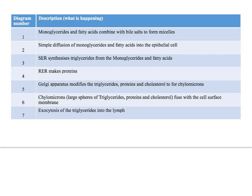Here are the mark points for the absorption of lipids. Monoglycerides and fatty acids form micelles. Because they are hydrophobic, they diffuse into the epithelial cell. The smooth endoplasmic reticulum synthesizes triglycerides from those absorbed fatty acids and monoglycerides. The rough endoplasmic reticulum makes proteins. The Golgi apparatus modifies the triglycerides and proteins and adds cholesterol to form spheres called chylomicrons — large spheres made from triglycerides, proteins, and cholesterol. They fuse with the cell surface membrane, and the triglycerides enter the lymphatic vessel through exocytosis of the chylomicrons.